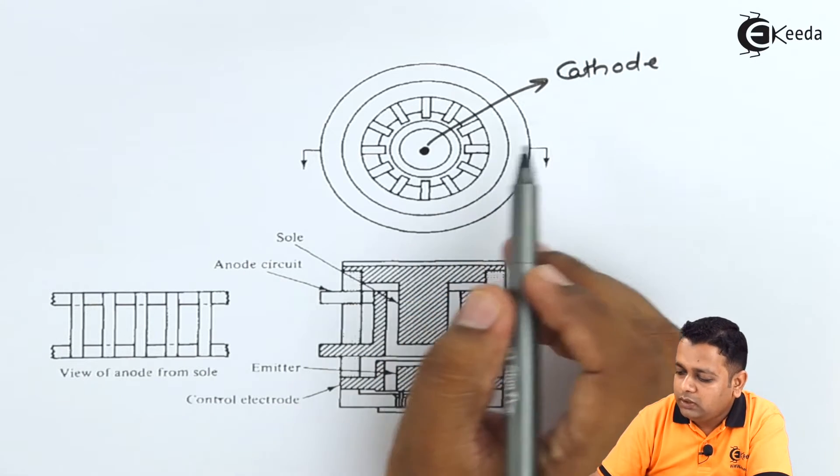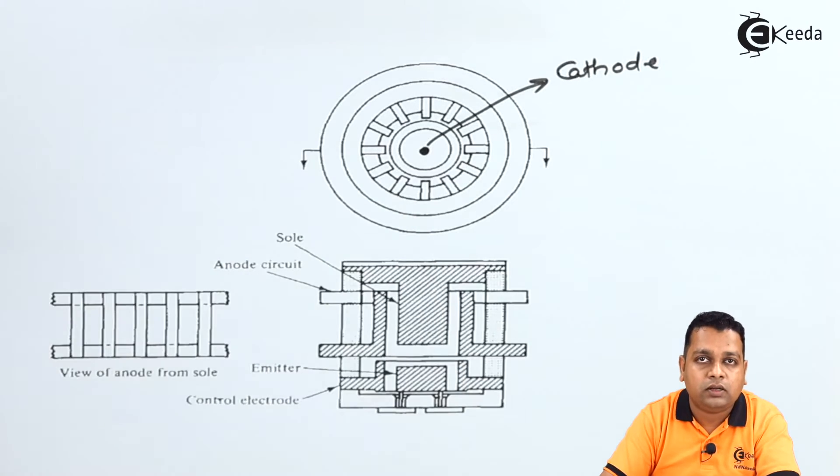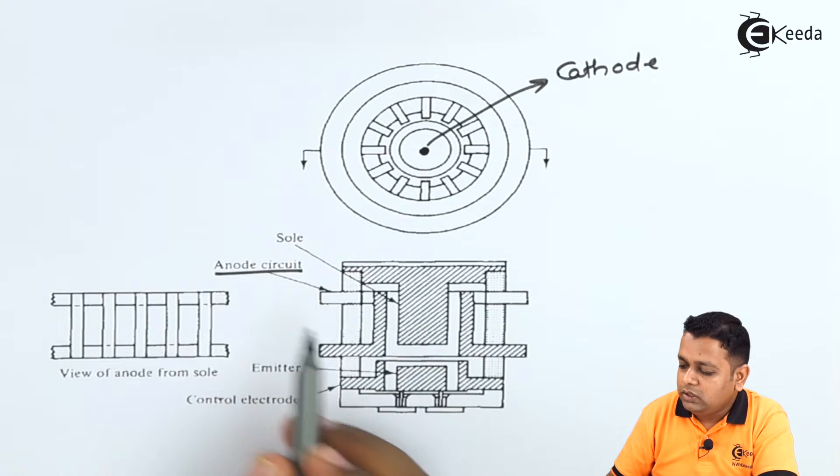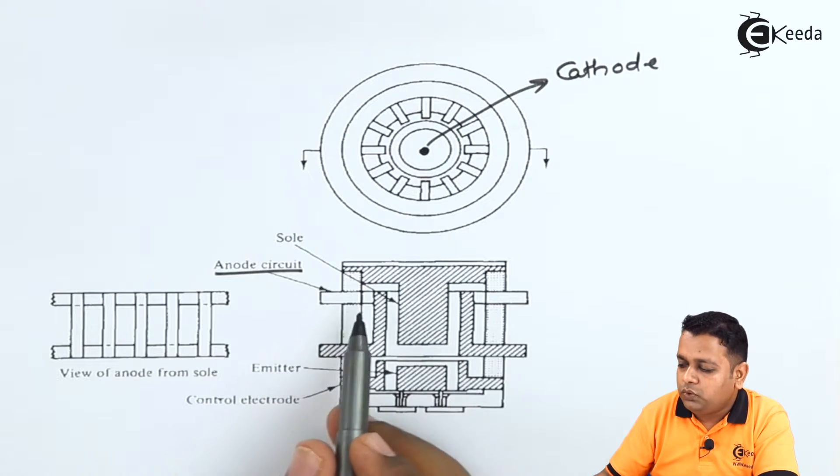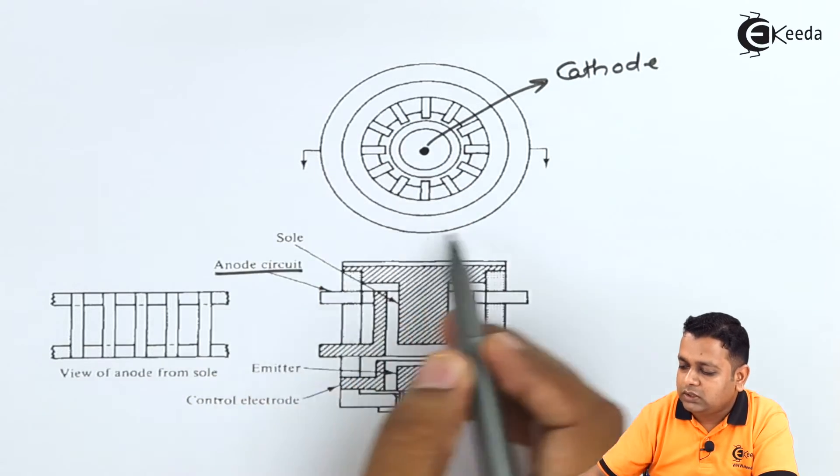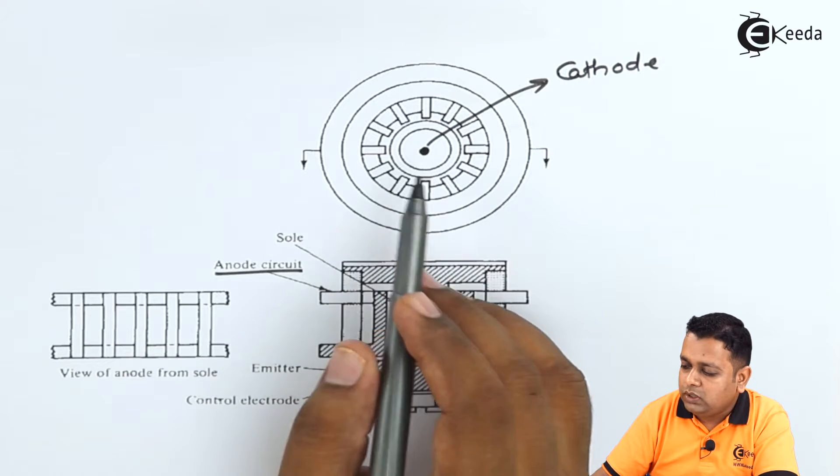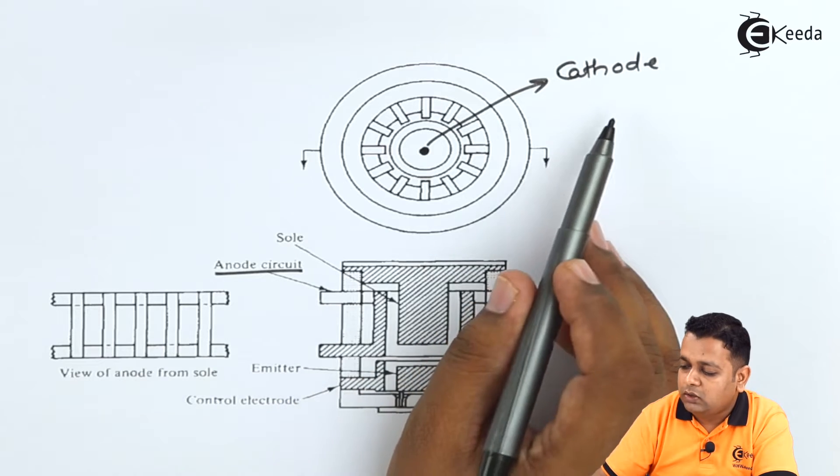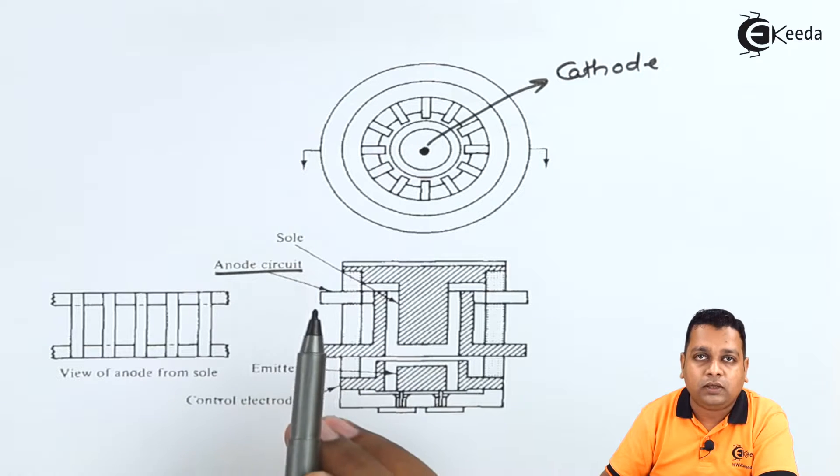Now after the cathode there is another important electrode that is anode. So anode circuitry is shown in this particular diagram. In this particular top view the outer circle you can consider for the anode. So there is cathode, there is anode, the potentials corresponding to the negative and positive will be given to them.